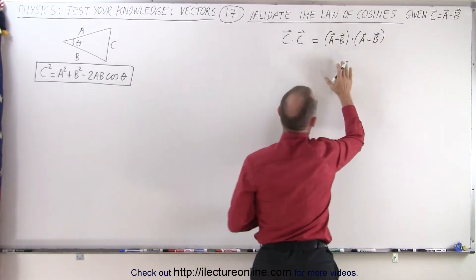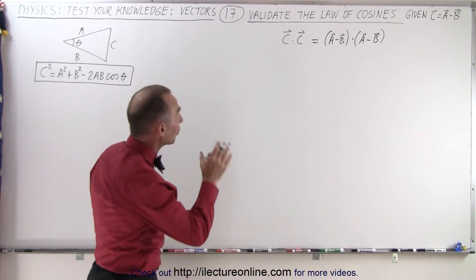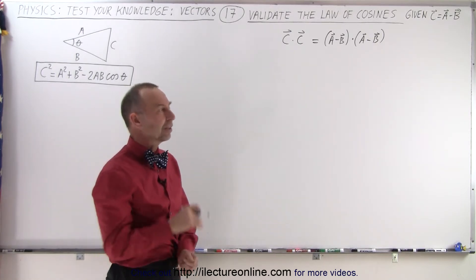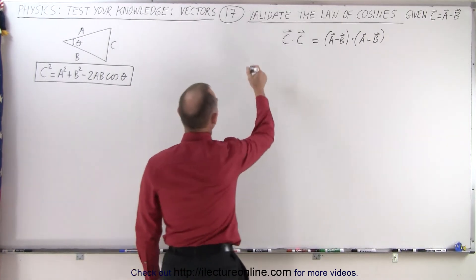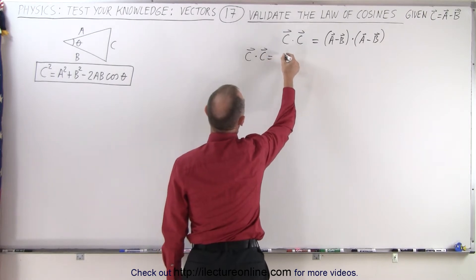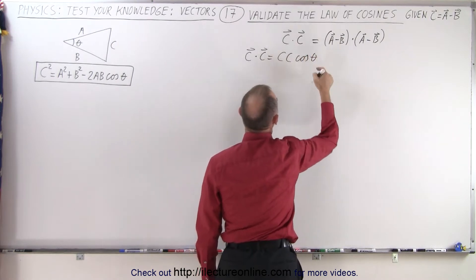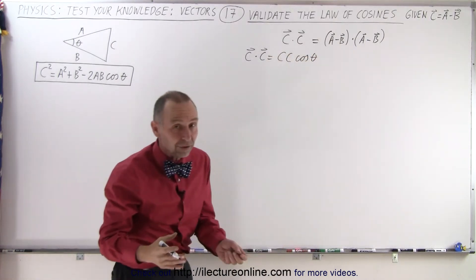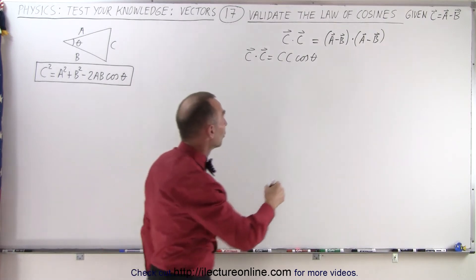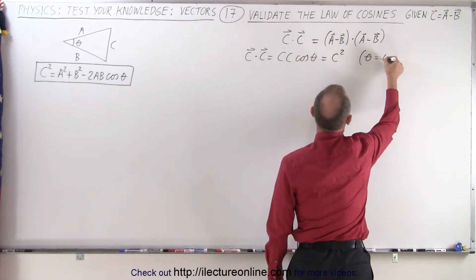That makes sense because if the vector C is equal to the vector A minus vector B, then the dot product of the left side must equal the dot product of the right side. So let's start with the dot product of the left side. C dotted with C is by definition equal to the magnitude of C times the magnitude of C times the cosine of the angle between the two. Since we're talking about the same vector, the angle between those two will be zero, and the cosine of zero is one. Therefore, this is equal to C squared.